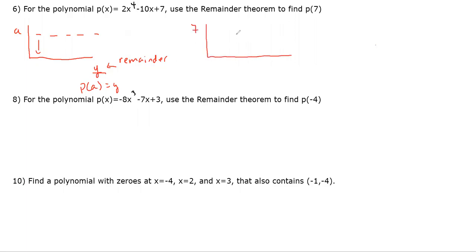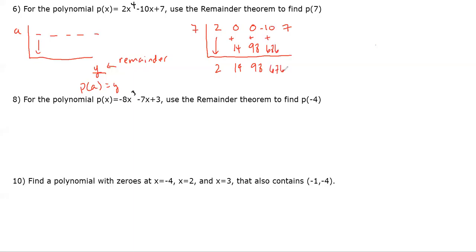We're doing P(7) where P(x) = 2x⁴ − 10x + 7. Using synthetic division with 7, we put in placeholders for missing terms — the coefficients are: 2, 0, 0, −10, 7. Bring down 2; 7 × 2 = 14; 0 + 14 = 14. Then 7 × 14 = 98; 0 + 98 = 98. Then 7 × 98 = 686; −10 + 686 = 676.